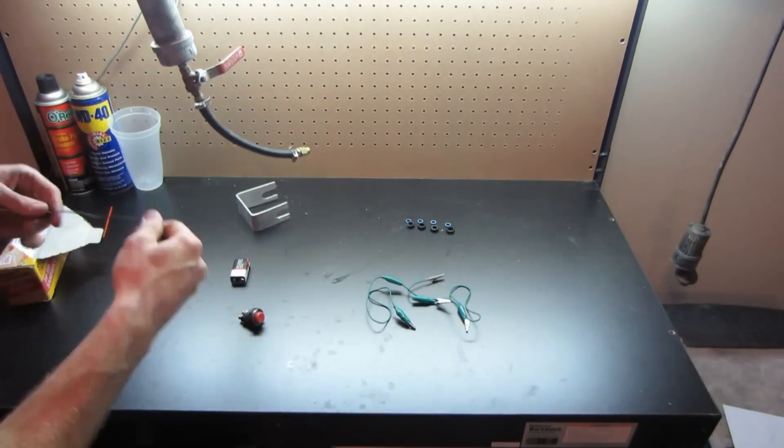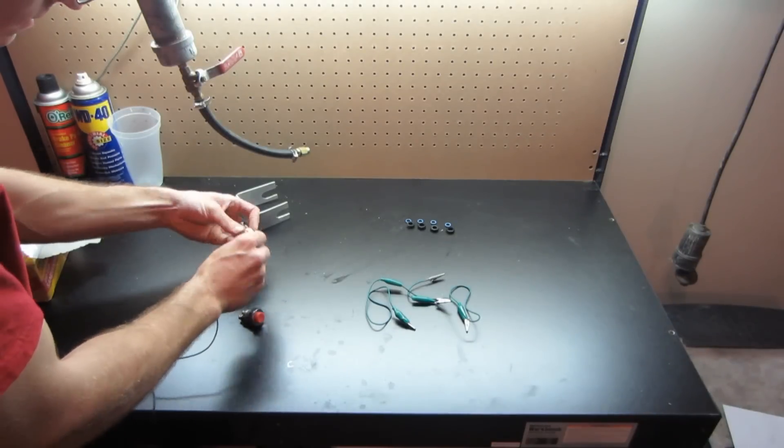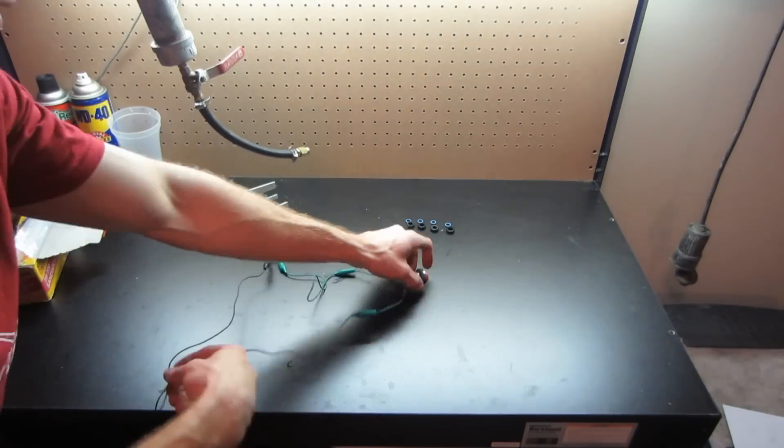When it comes to the injector harness, you just need a switch to pulse the injector, but the polarity is irrelevant. The injector operates off a magnetic coil and it just needs a ground and a power source to work.